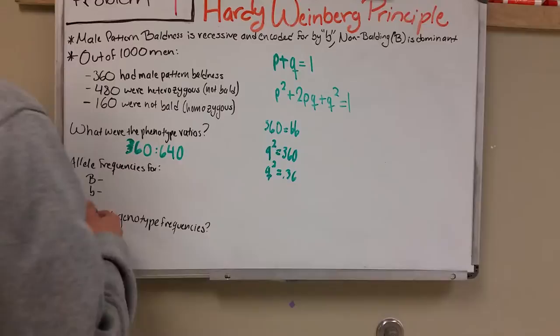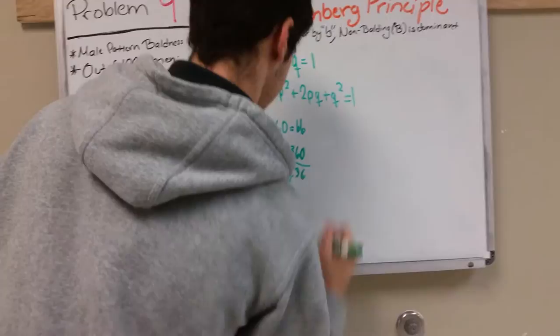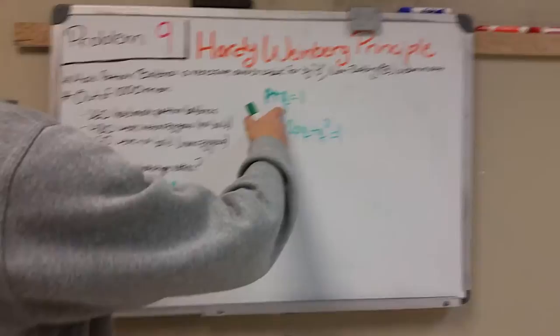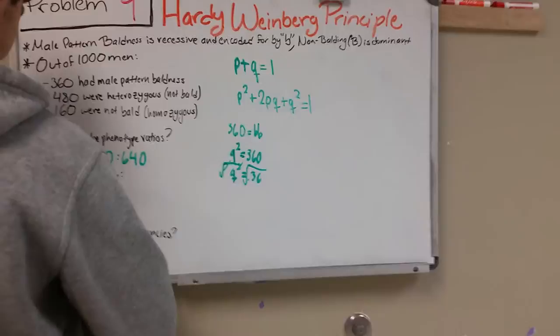We're looking for the allele frequencies to find the recessive allele for it. We just square root this and we get 0.60. So we have the recessive allele. And since the recessive allele is 0.60, then we know that the dominant allele will be 0.40 because that's equal to 1.